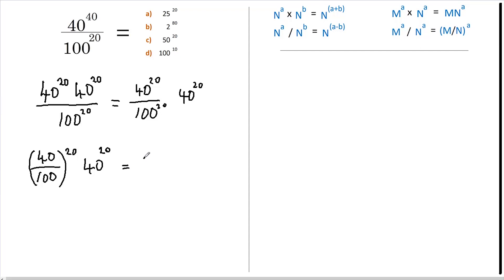This becomes 2 fifths to the power of 20, multiplied by 40 to the power of 20. And now using this rule here, we get 2 fifths times 40, all to the power of 20. So that is 16 to the 20.